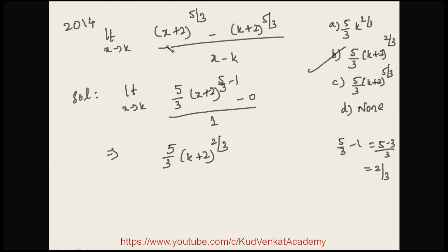Just by looking at the question we can identify the answer: the power given is 5/3, and substituting k gives (k+2) to the power 5/3 - 1 = 2/3. If you understand L'Hôpital's Rule, you can achieve the answer in less than one minute. I hope L'Hôpital's Rule is very clear for you now.